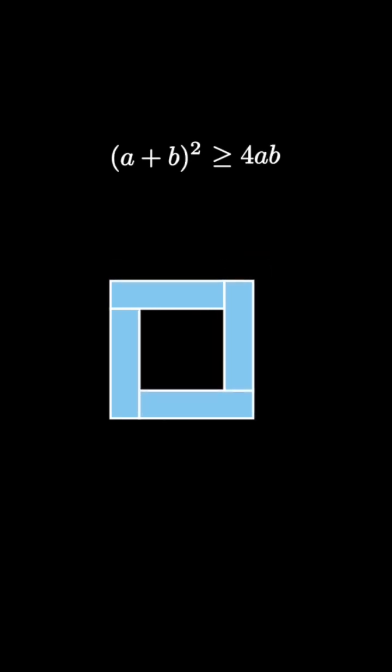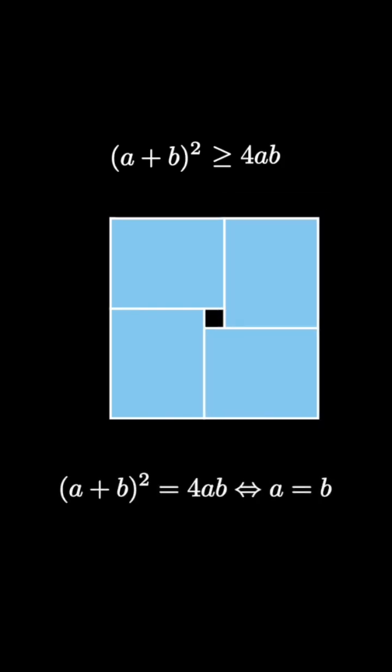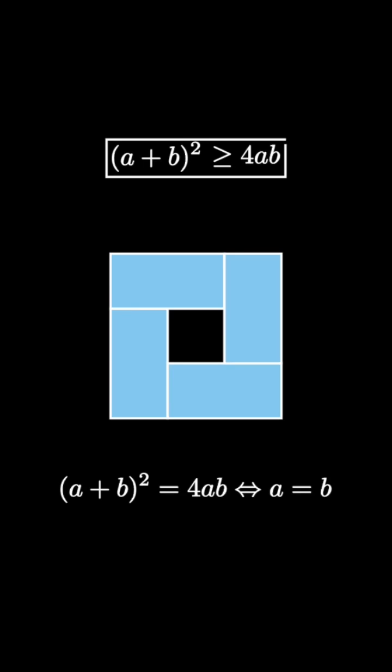This is true for all positive pairs and we see that we get equality between a plus b squared and 4ab if and only if a equals b. Taking square roots and dividing by two yields the arithmetic mean geometric mean inequality.